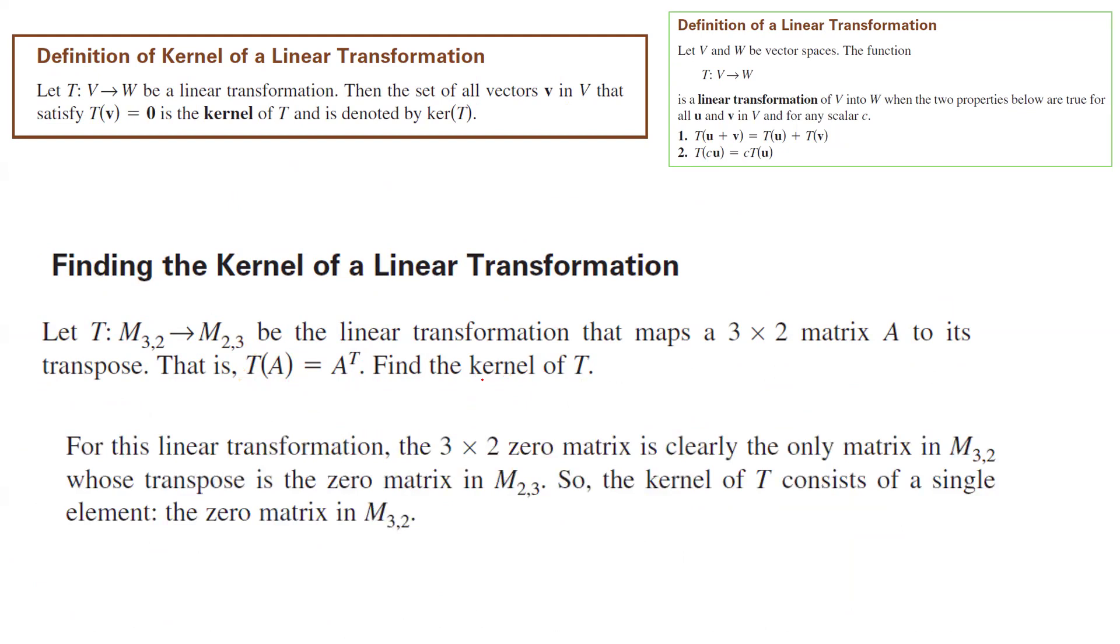Suppose I ask you to find the kernel of T. Well, to find the kernel of T, we are looking for all vectors in the domain such that T of that vector is equal to zero vector from the codomain. So you're basically finding a matrix that is mapped to zero matrix. Well, the only matrix that is going to satisfy this condition is the zero matrix. So the kernel for this linear transformation is zero matrix. You don't have any other choice.